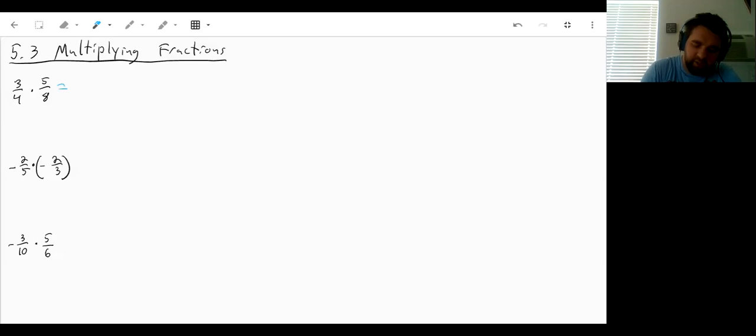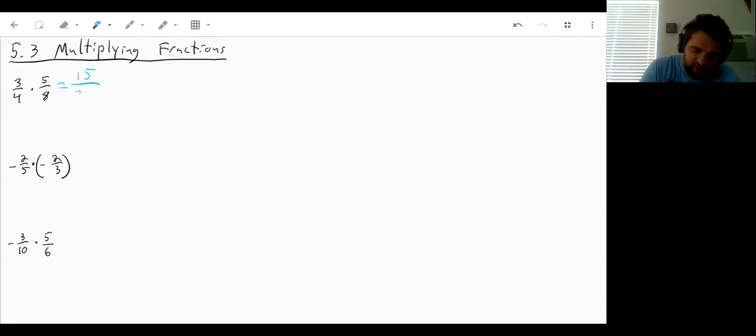So for this first one we can multiply our 3 times 5 which will get us a 15 on top and we multiply our 4 times 8 which will get us 32 on the bottom. That's it. Let's try the next one.